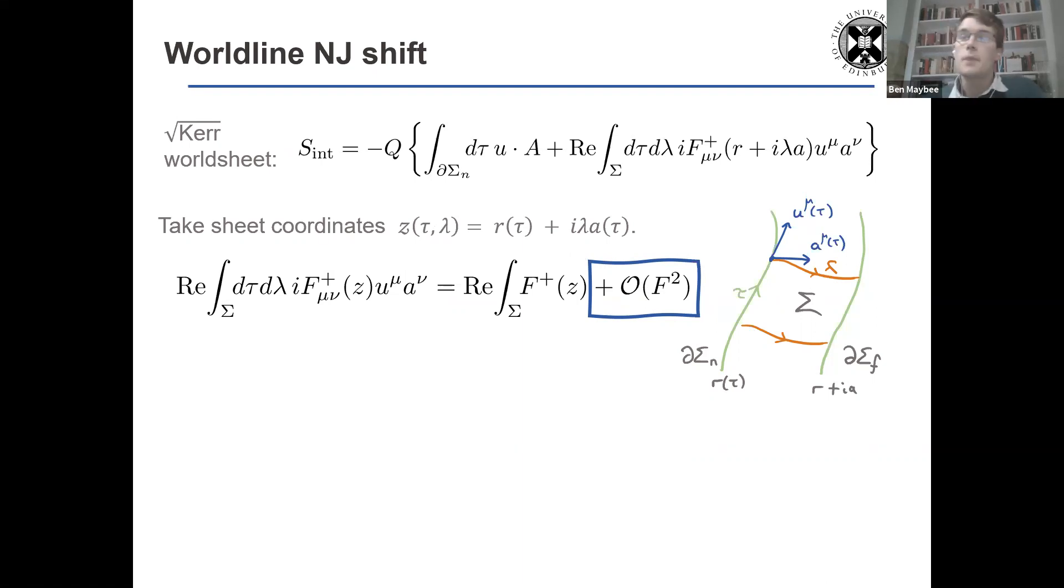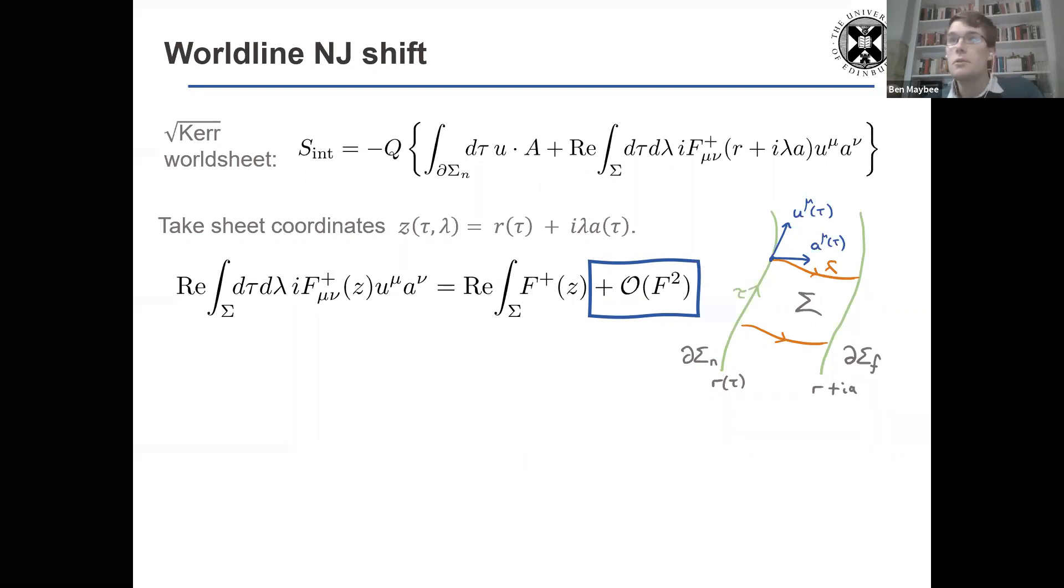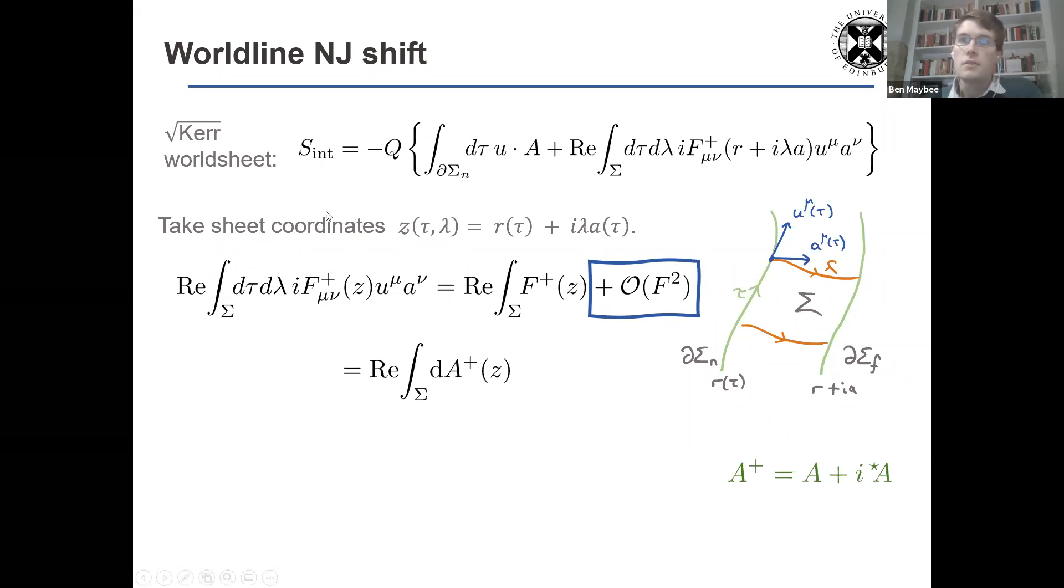And now what I'm going to do is, because there are no sources on the worldlines, I'm going to introduce two independent gauge fields. So I'm going to introduce a combination of these gauge fields, A and star A, independent. Then I can just rewrite the worldsheet action in a very natural form, which I can integrate using Stokes' theorem.